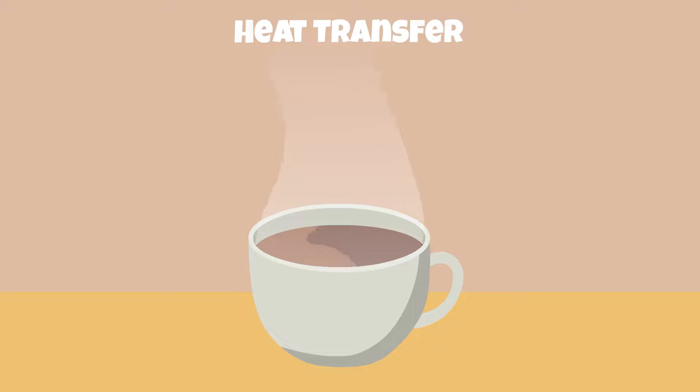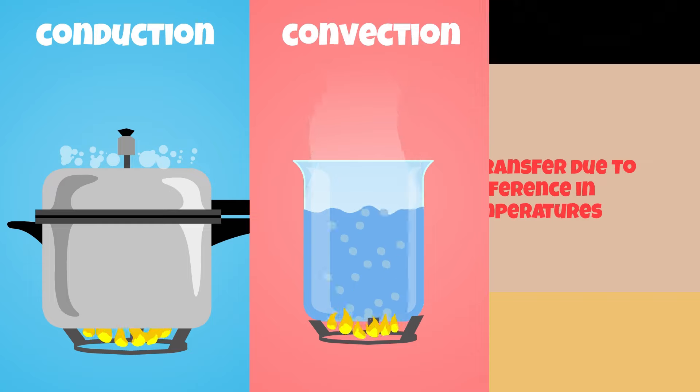In basic terms, heat transfer is the process by which heat flows from one object or system to another due to temperature differences between the two. There are three main ways by which heat transfer occurs: conduction, convection, and radiation.